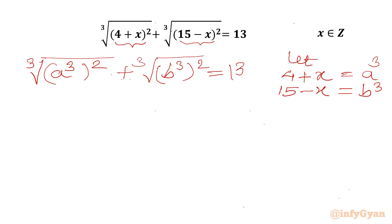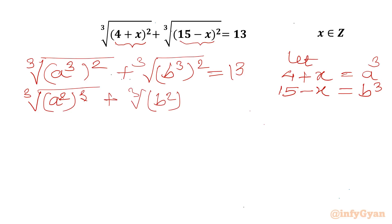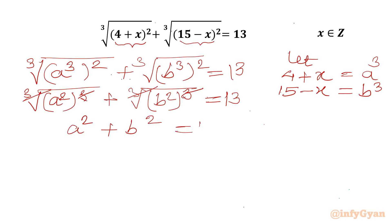Now using exponent properties, I can swap the parts. So I can write cube root of a² whole cubed, plus cube root of b² whole cubed, equal to 13. We can cancel cube root with cube, so our first equation comes out: a² + b² = 13. This is Equation 1.